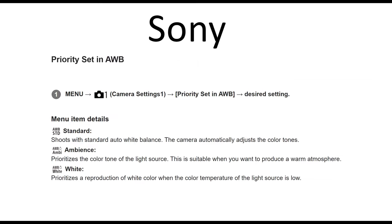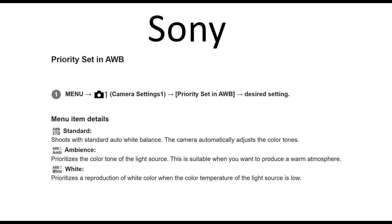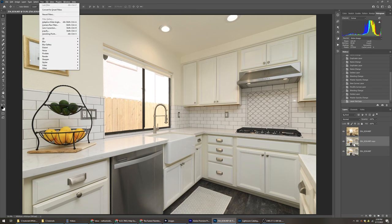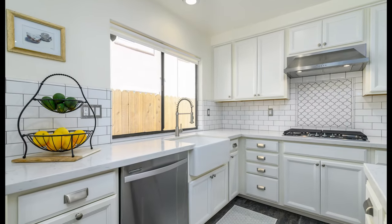Sony has a few more options: Auto White Balance Standard, Auto White Balance Ambience, and Auto White Balance White. Standard is your typical auto white balance and should work most of the time with flash. If you're having issues on your particular Sony camera, you can try White Priority, but Standard should get you very close almost all the time. And across Canon, Nikon, and Sony — if your white balance is off, you can always adjust in post-processing. The goal of these auto white balance settings is to get you a good starting point, which you can then refine using curves adjustment layers or actions in Photoshop.